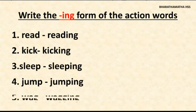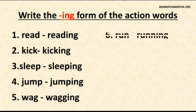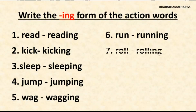The fifth one has a small difference. W-A-G, wag, becomes W-A-G-G-I-N-G — wagging. That is, the ending letter doubles in the ing form. Similarly, run — running. The last letter N doubles in the ing form. Roll — rolling.